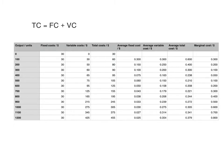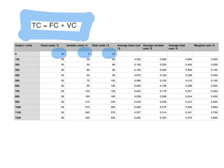You should be able to calculate each of these from a given data set. In this example you are given output, fixed costs, and variable costs. Total costs are the sum of fixed and variable costs. When output was zero, fixed costs were $30 and variable costs were $30. When output was 800 units, fixed costs were still $30 and variable costs were $165, so $30 plus $165 gives a total cost of $195. Total cost is simple and easy to calculate.